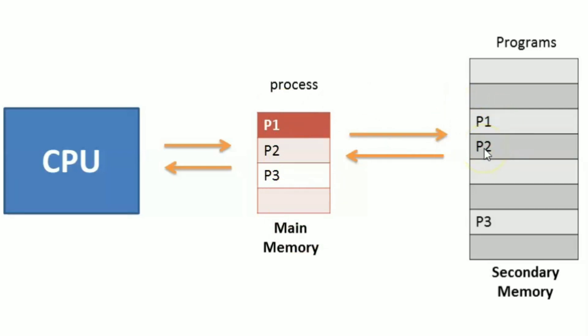In a computer, we can install MS Office. It is installed and the OS allocates a memory block for it. So the important files are stored in the block. If we have any application, there are many different memory blocks.